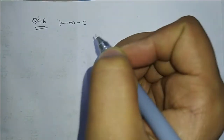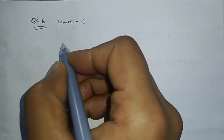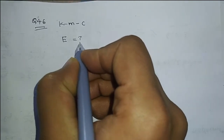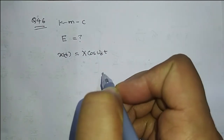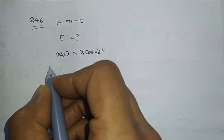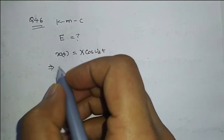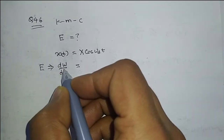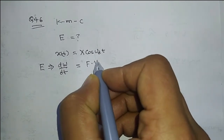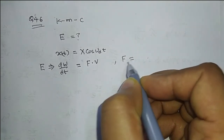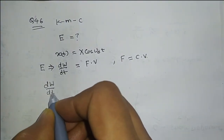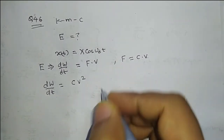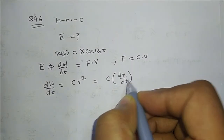Question number 46: A spring-mass viscously damped system is given and we need to find the energy dissipated per cycle for a harmonic disturbance x = X cos(ωd·t). For a viscous damped system, the energy dissipated equals the rate of change of work, which is force times velocity. The damping force for a viscous system is c times velocity, so energy dissipated equals c·v² = c·(dx/dt)².